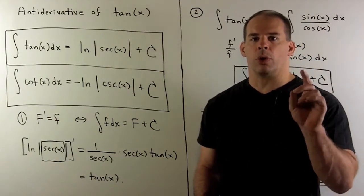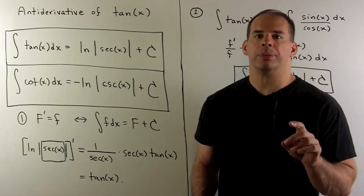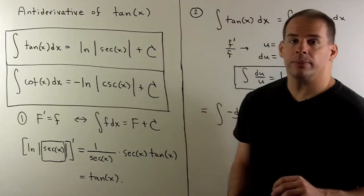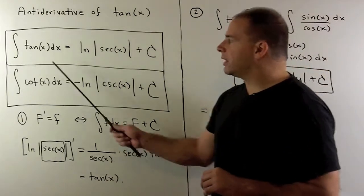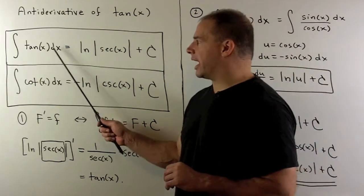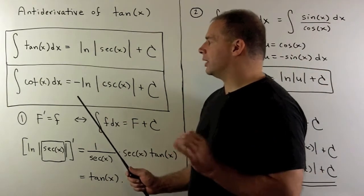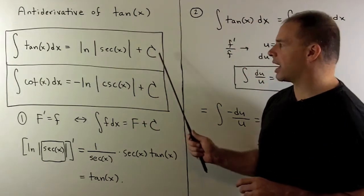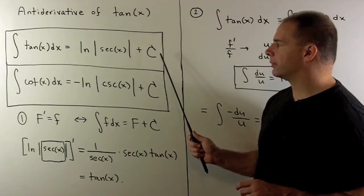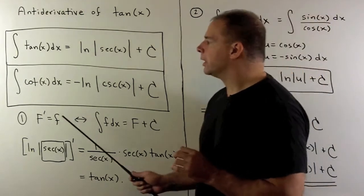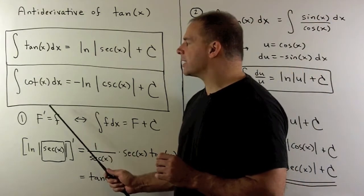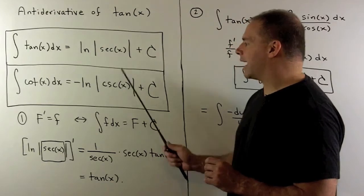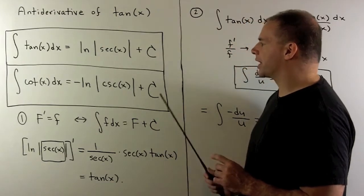Using u-substitutions with 1 over u, we want to look at the antiderivative of tangent of x. The indefinite integral of tan x with respect to x is equal to the natural log of the absolute value of secant of x plus a constant. Similarly, the indefinite integral of cotan of x with respect to x is minus natural log of the absolute value of cosecant of x plus a constant.